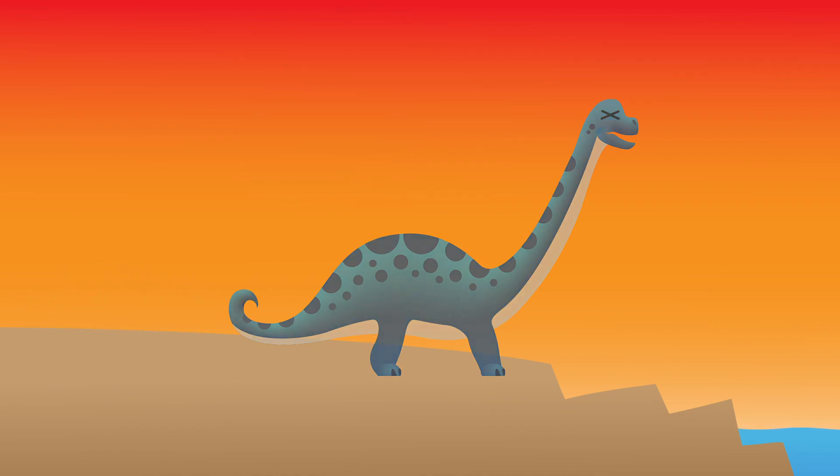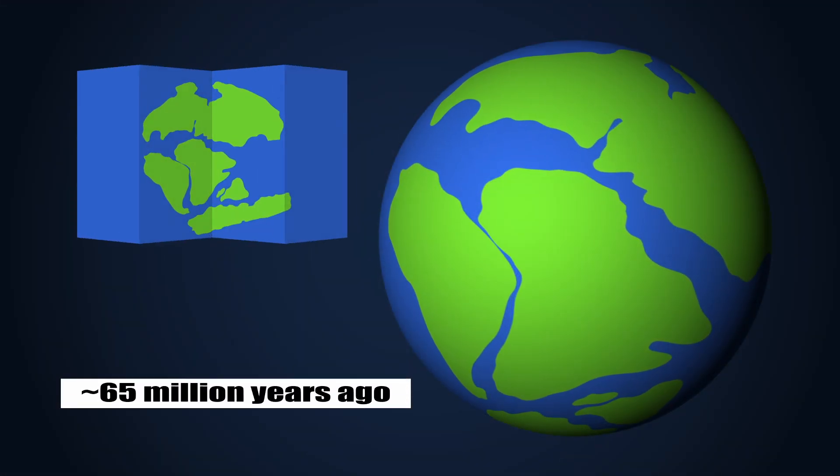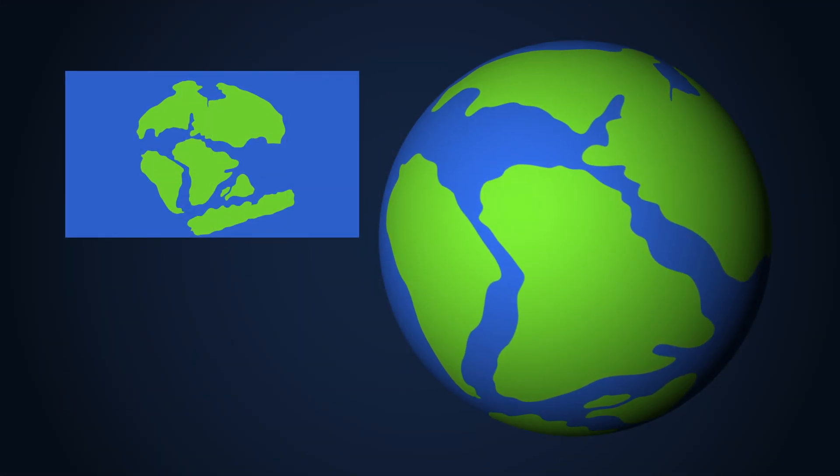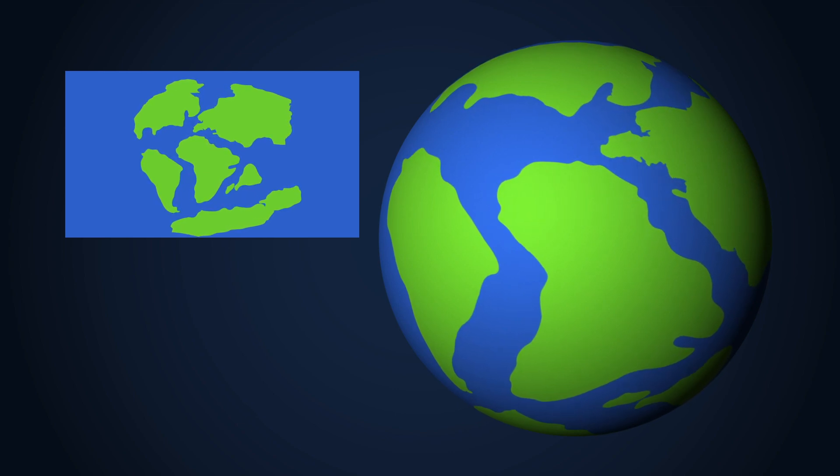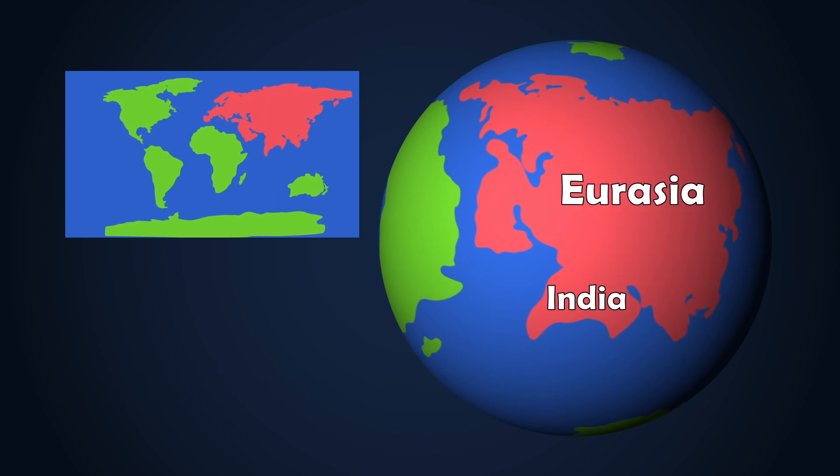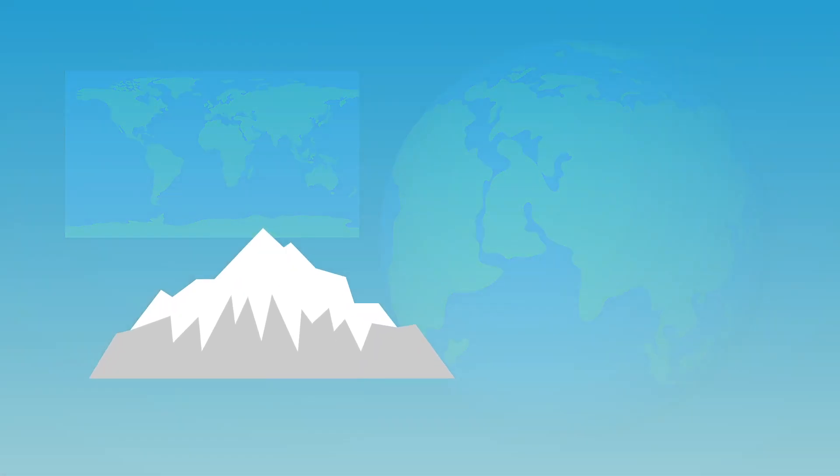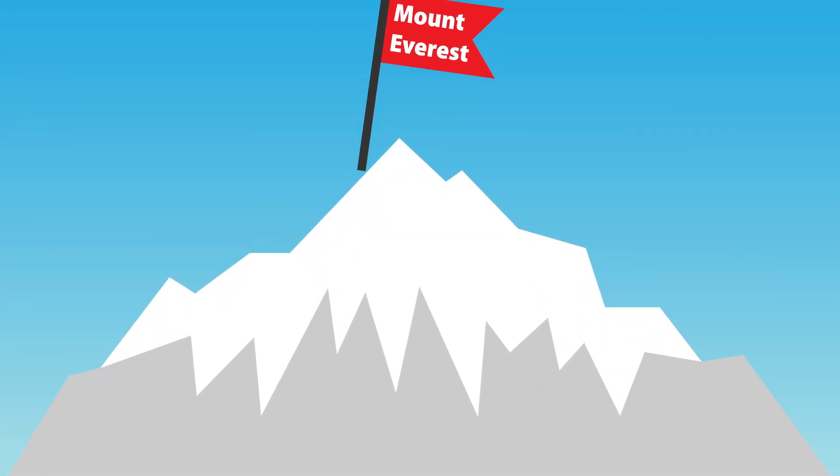As the last of the known dinosaurs began to disappear around 65 million years ago, and new life began to take over, Pangea's separating finally began to settle around 50 million years ago when India collided with Eurasia, forming the Himalayas. This mountain range contains the highest peak on Earth, Mount Everest.